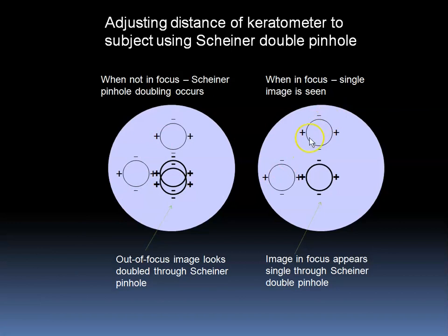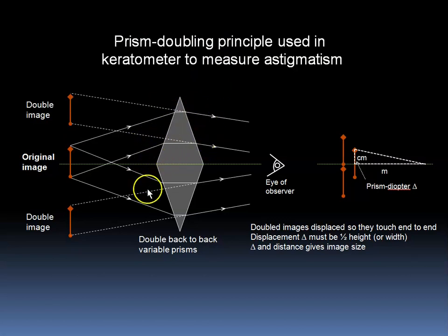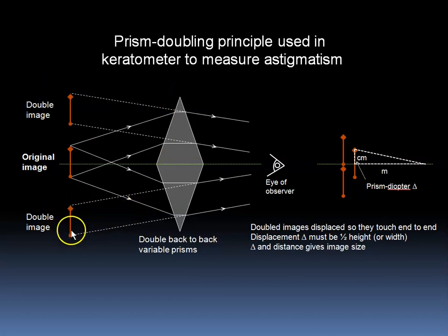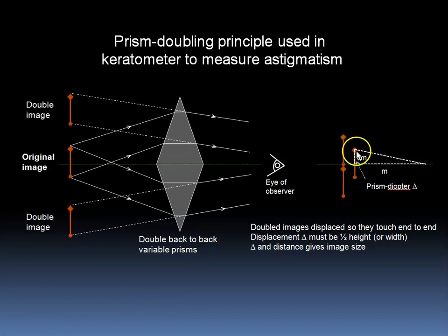The extra images created by the doubling prisms are used to measure the corneal power in different meridians. We have an original image giving off light, some of which goes through the upper prism and some through the lower one. The upper prism bends the rays towards the base, as does the lower prism. A virtual image is created towards the apex of the upper prism and the apex of the lower prism, giving us multiple images. If the power of these prisms is changeable, it can be adjusted so that the bottom of one image just touches the top of the other. Because the prismatic displacement of the object must be one half the height of the object, we can now calculate the image size.